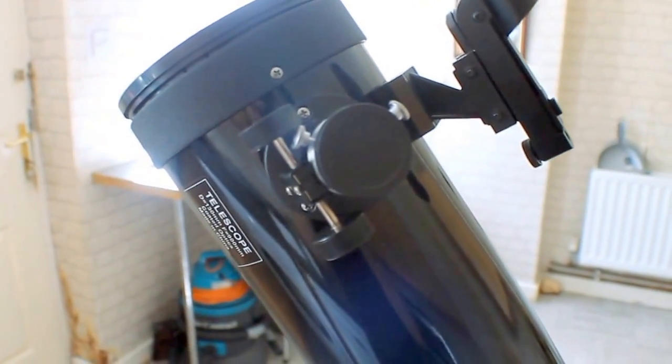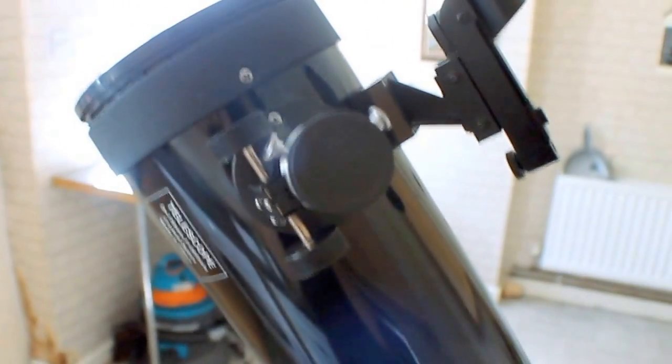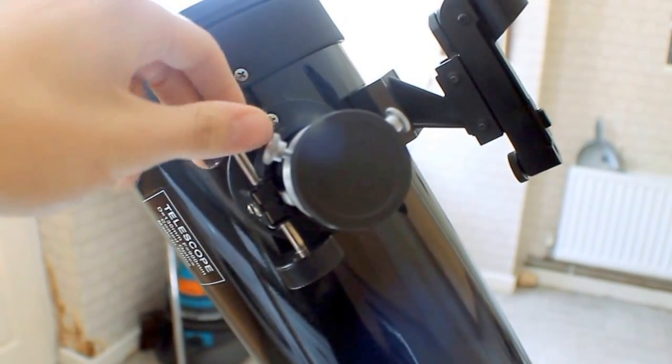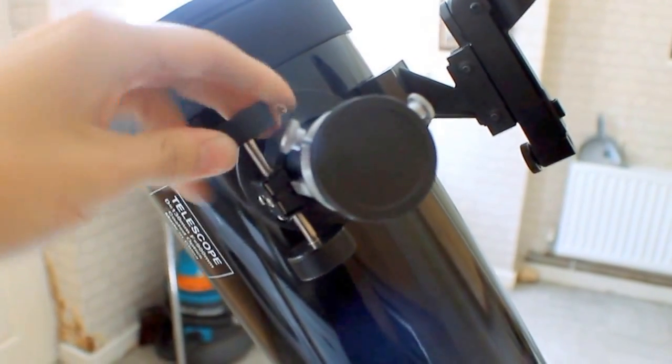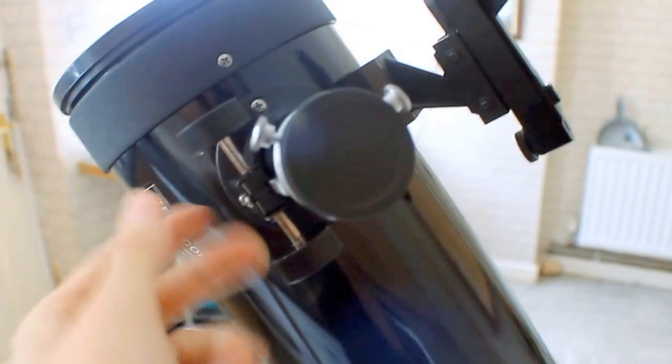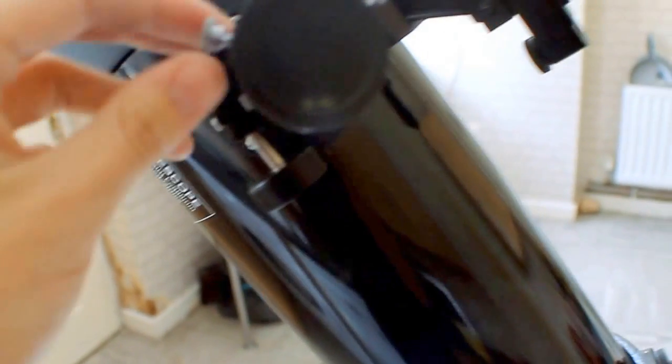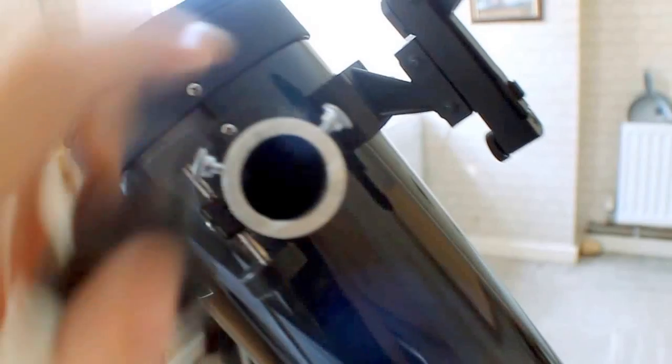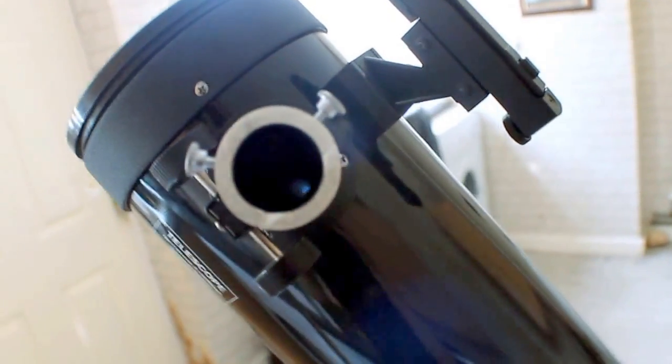This here is your focus tube, or drawtube. And this is where you'll pop your eyepieces so you can focus it up. All you do is rotate that. Sometimes you can loosen it up with screws under here, or other sections which will allow you to loosen it up. And then you'll have the clamp knobs, which will keep your eyepieces in the telescope.